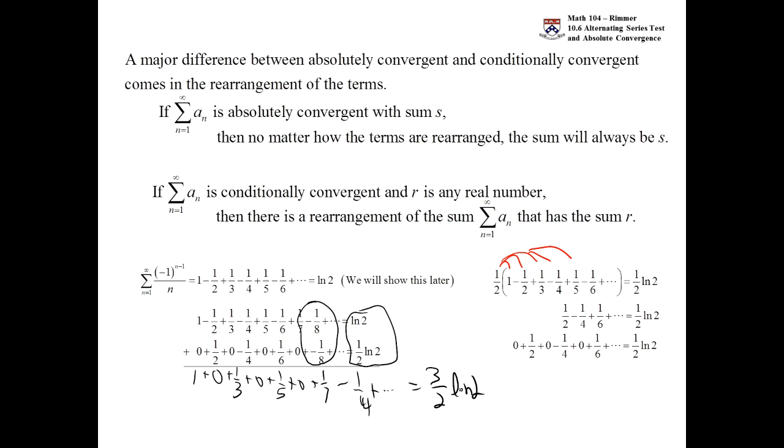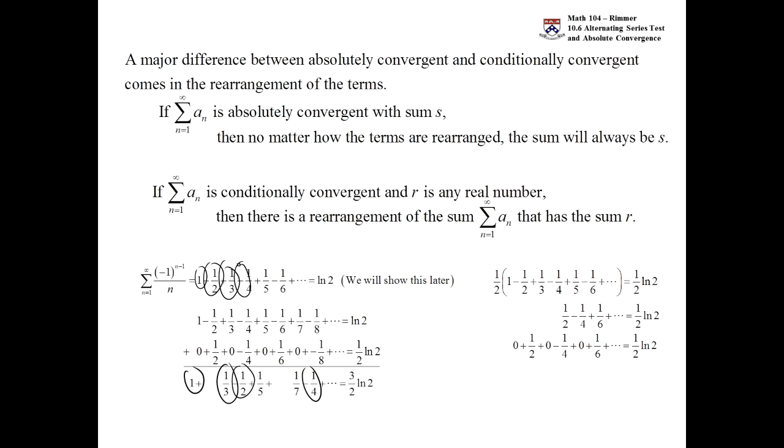Okay. Let me go to the animation there. But if we look closely at this, we have a one, we have a negative half, a positive third, a negative fourth, a positive fifth. If I was to keep going, I'd have a negative sixth, a positive seventh. This thing would go on forever and ever. Basically these are the same terms.